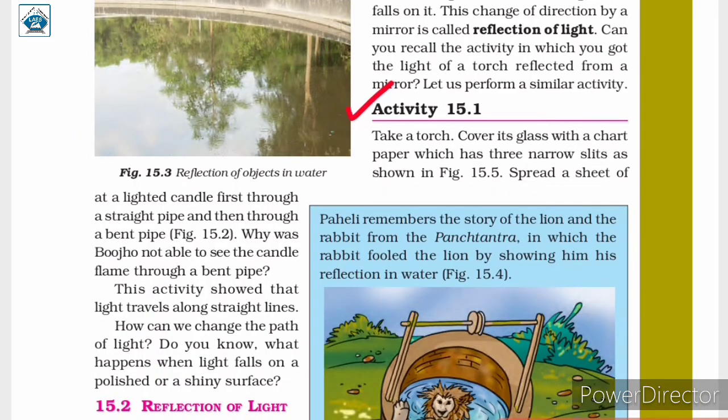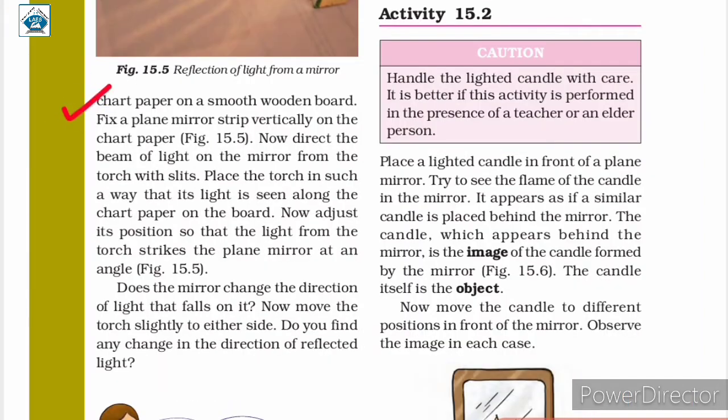Activity 15.1: Take a torch. Cover its glass with a chart paper that has three narrow slits, as shown in figure 15.5. Spread a sheet of chart paper on a smooth wooden board.